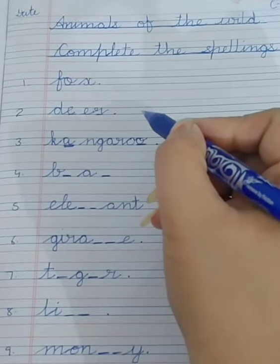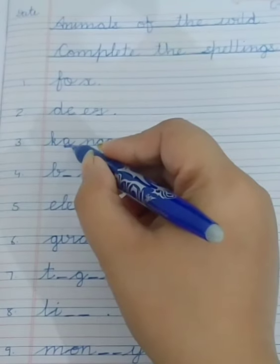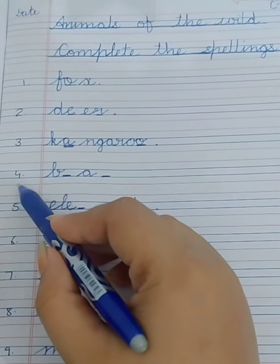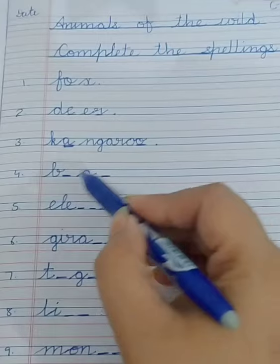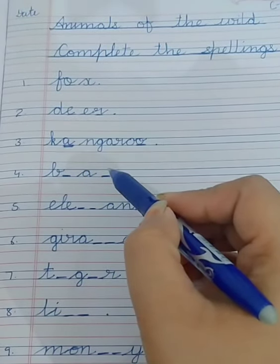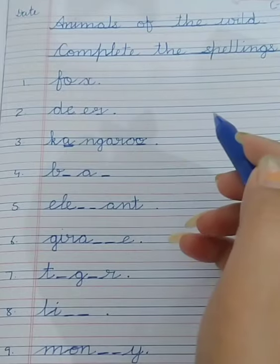Now this is number four. The word is B dash A dash. Such a small spelling. An animal which likes to eat honey, that is a bear. Bear, B-E-A-R, bear.